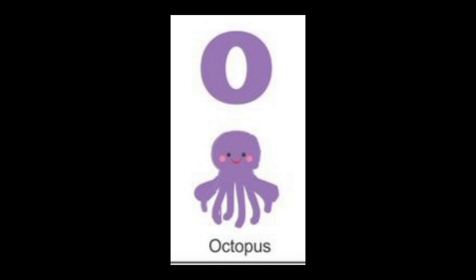The next letter is O. O for octopus. The color of octopus is purple. The next letter is P. P for pink. The color of pink is pink.